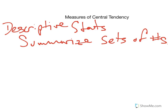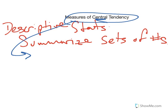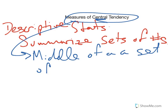So descriptive statistics summarize sets of numbers, and in particular, measures of central tendency are going to show us the center, basically where the middle of a set of numbers is. These are super handy, and the first one I'm going to talk to you about is one that you're probably very familiar with.